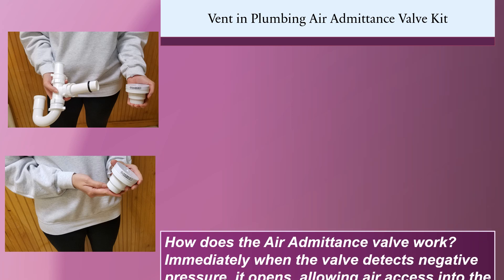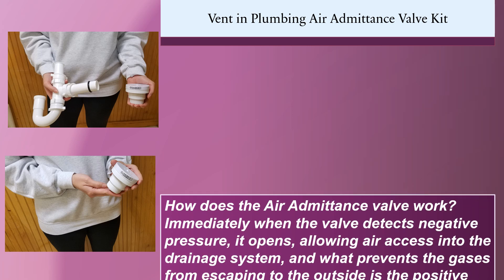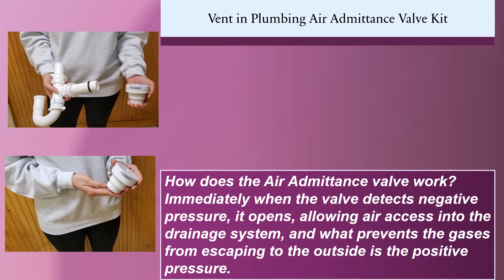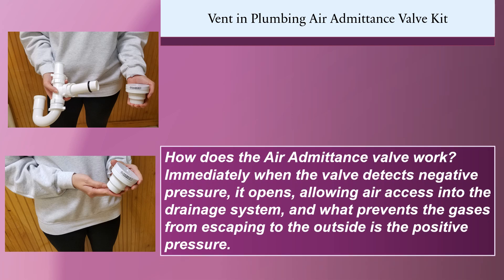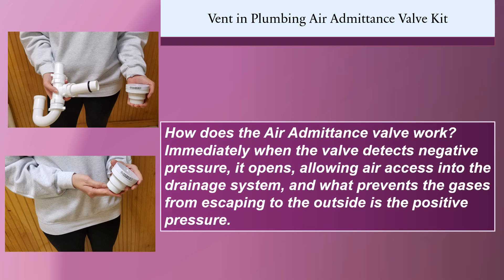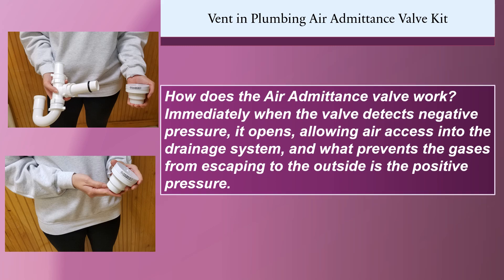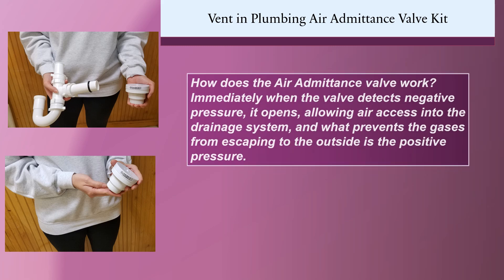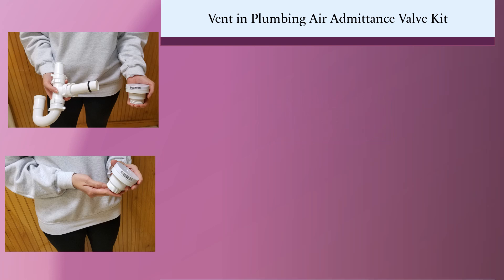How does the air admittance valve work? Immediately when the valve detects negative pressure it opens, allowing air access into the drainage system, and what prevents the gases from escaping to the outside is the positive pressure.